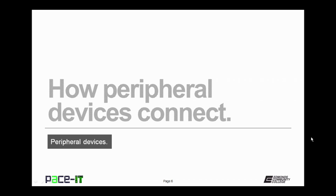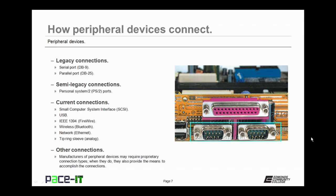Now, let's move on to how peripheral devices connect to the PC, and we'll start with legacy connections. They can connect through a serial port, the DB9 — that is a D-Shell 9-pin connection. Or, they can connect through a parallel port, the DB25, a D-Sub miniature 25-pin connection. Most modern systems do not come with a serial port or a parallel port anymore, so you need to be aware of that, just in case you buy a peripheral that requires that type of connection.